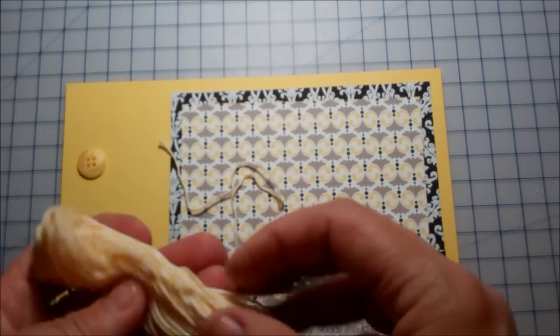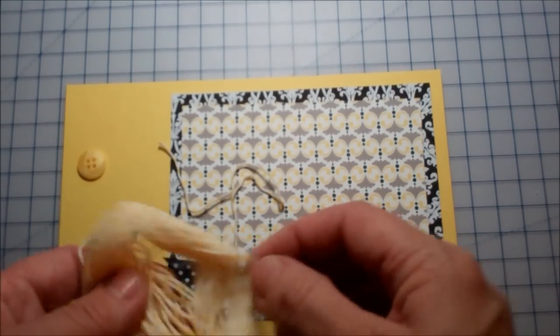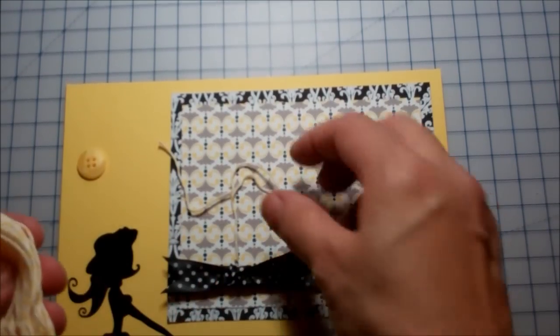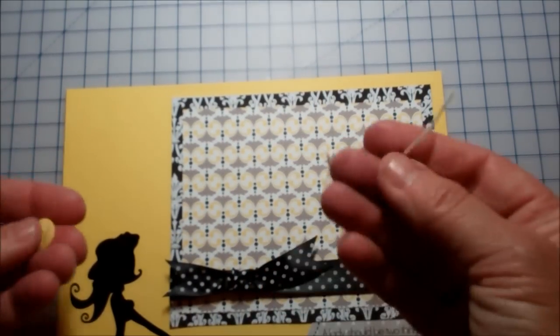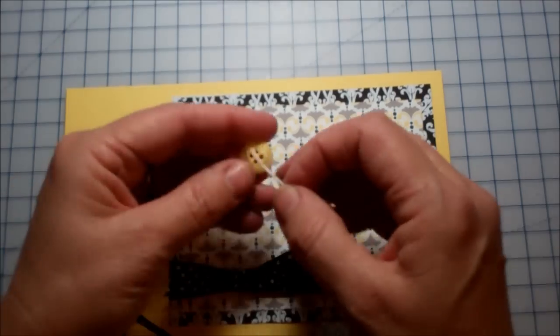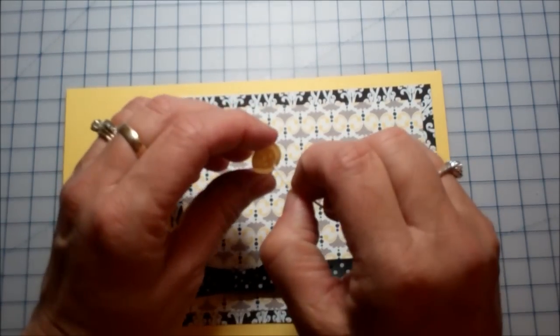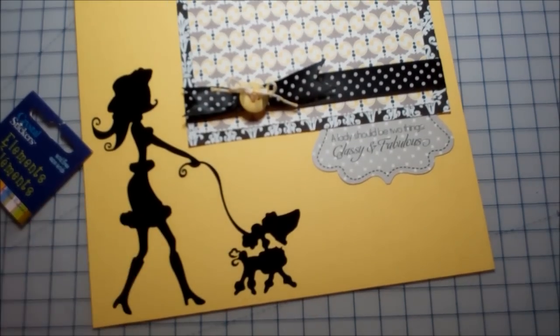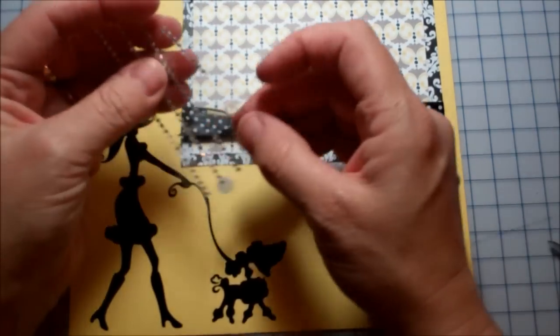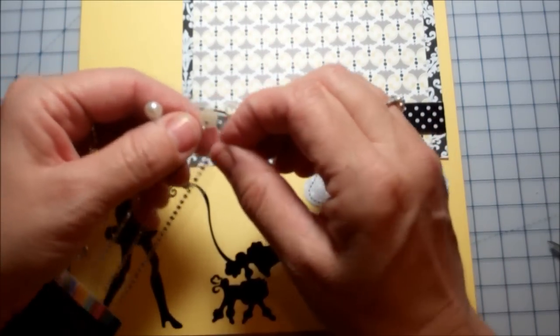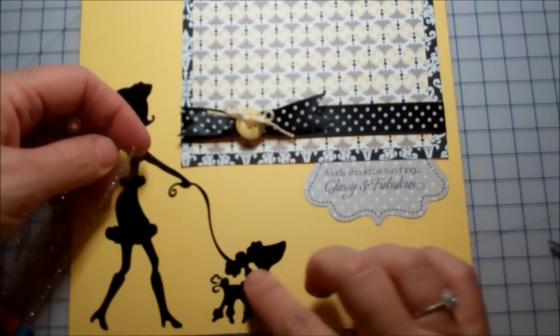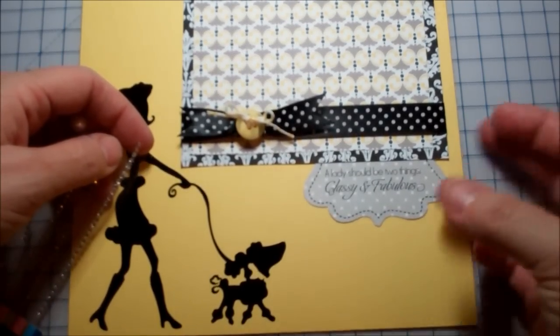I'm going to use a little bit of Divine Twine. And this came from Whisker Graphics. Yeah. I wonder if I can get away with just using that piece. Let's see. Okay. So I've decided that I think the little dog is missing some jewels around its neck.